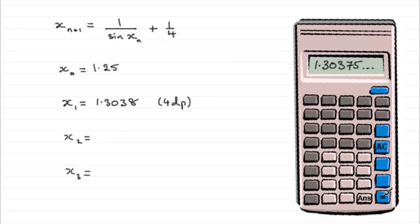And then to get x2, all you've got to do is just press equals again. And if you do that, then you'll get the second iterative approximation. So to four decimal places, this is going to be 1.2867 to 4dp.